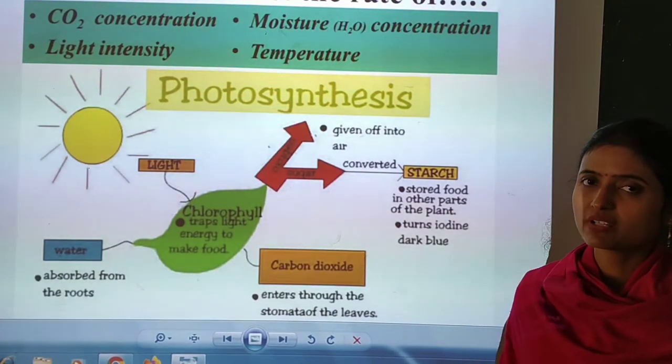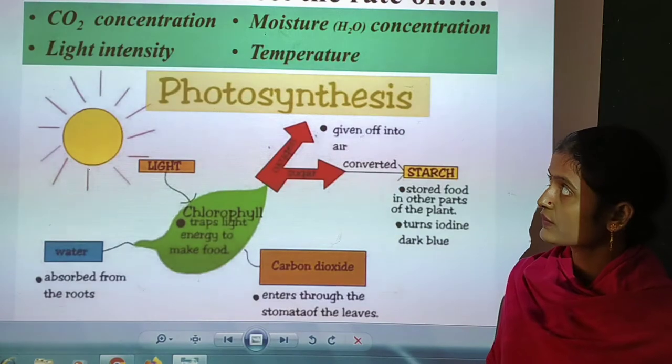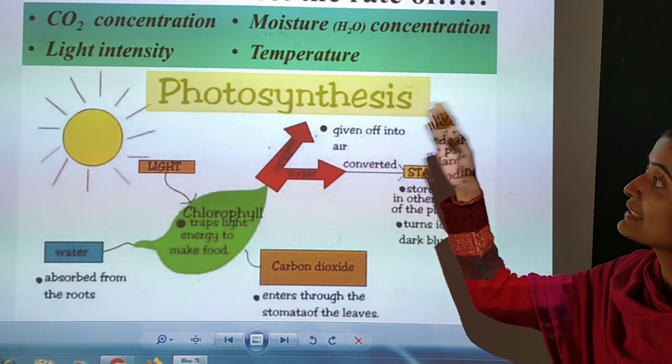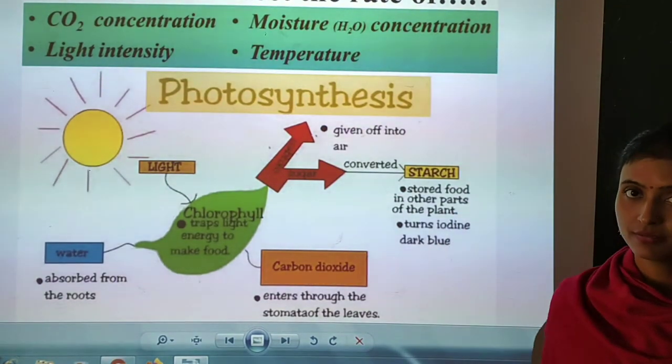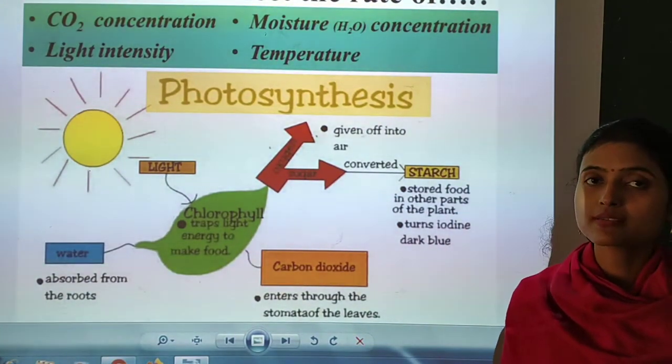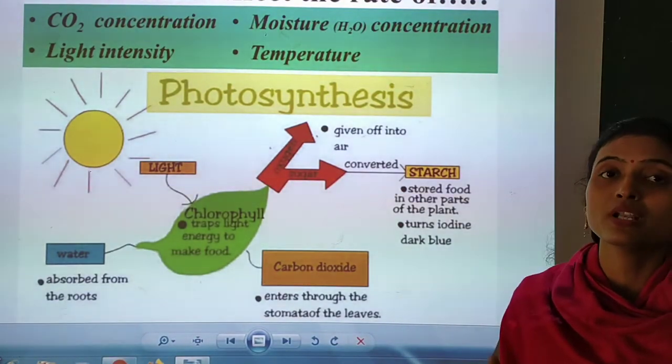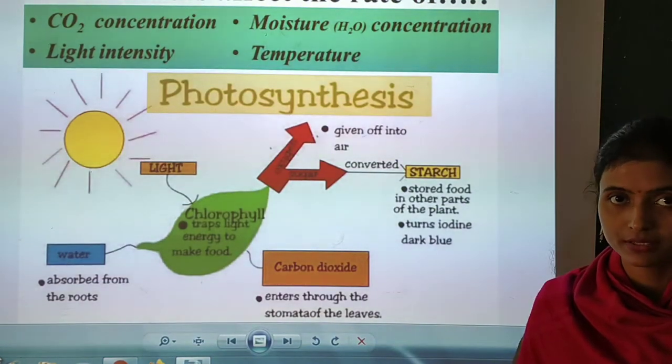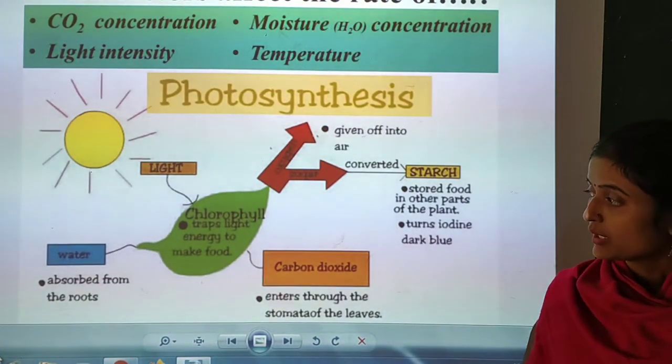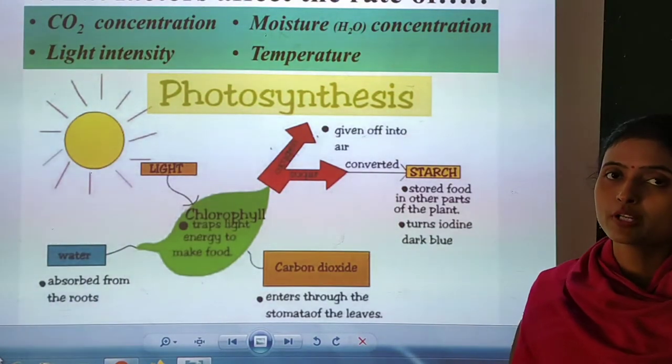Today we will discuss about photosynthesis, and after the photosynthesis definition, I will give you what factors affect the rate of photosynthesis - the name of the factors. According to class 7th, I will give only the name of the factors and how it will work and what it will give the result about the procedure of photosynthesis. So listen carefully.